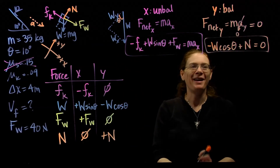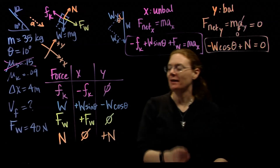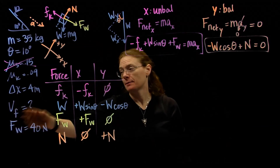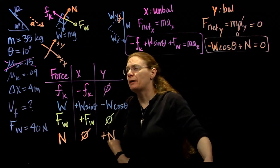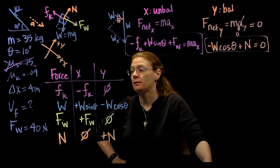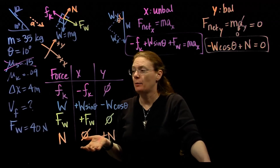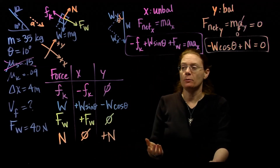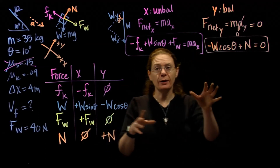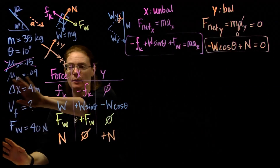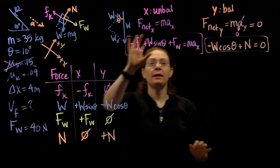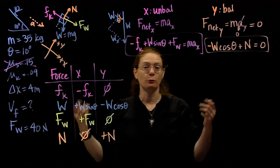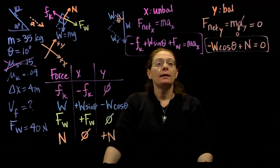What do we do once we get those equations? We go back and ask what the question is asking for. We want to know the final velocity of the child. We know the distance traveled — this is a kinematics problem, which means I'm going to need to know my acceleration. Acceleration is the one variable that connects forces to kinematics. If I can get the acceleration out of my forces, I can solve it with just standard kinematics.